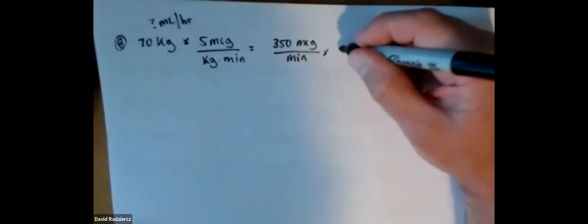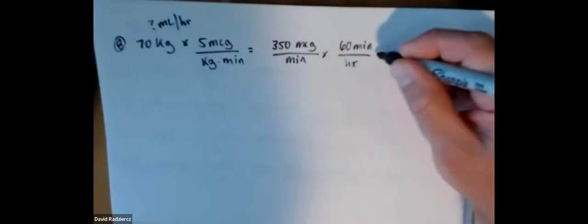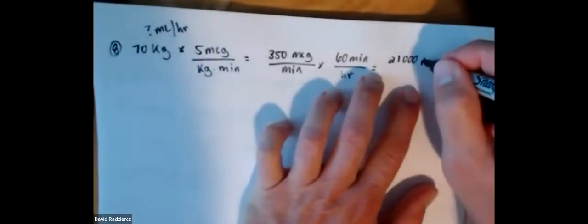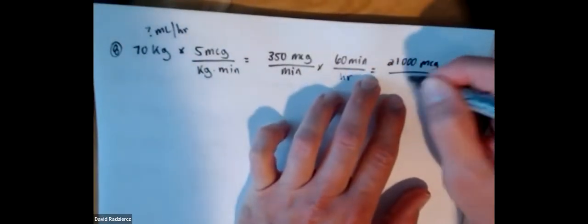Since I know I'm looking for milliliters per hour, I'm going to take an additional step and convert this into hours by multiplying by 60. So 350 times 60 is 21,000 — that's micrograms per hour.